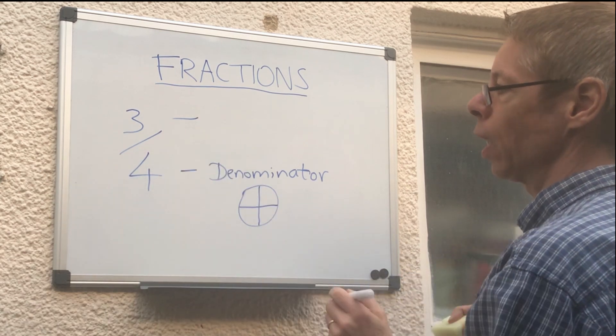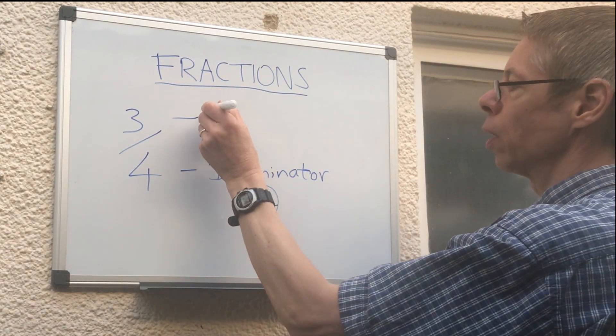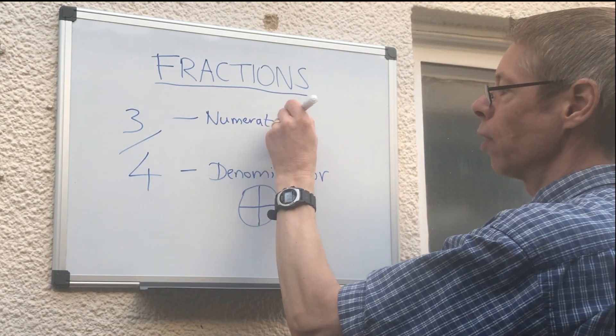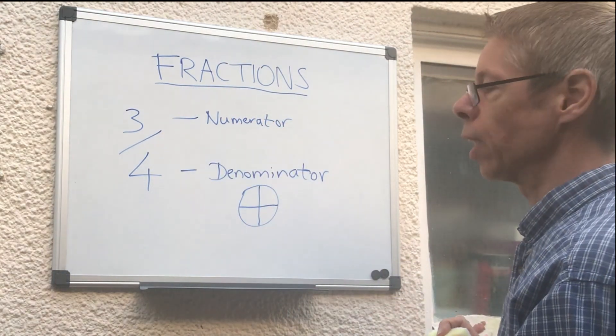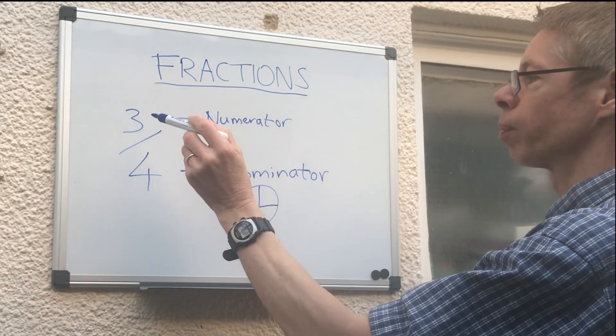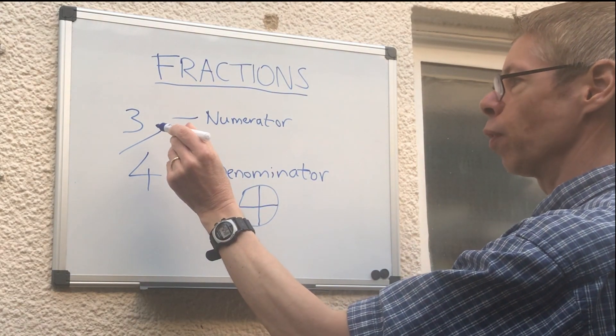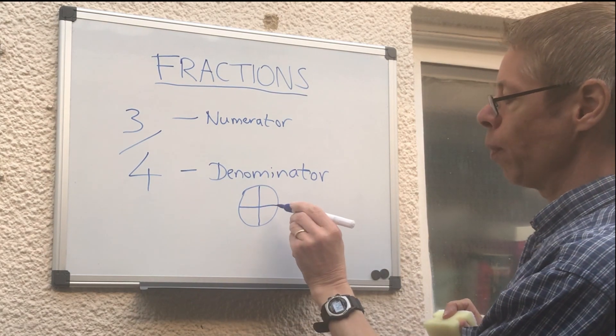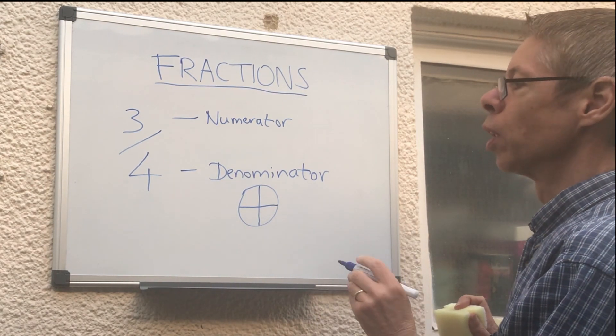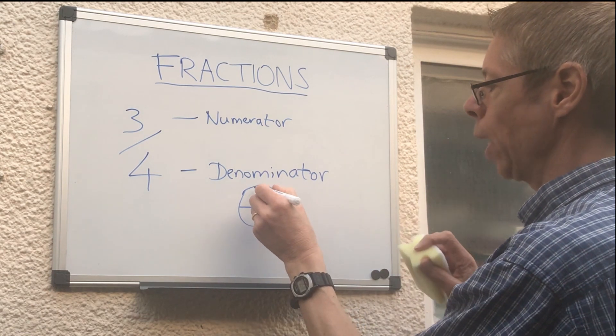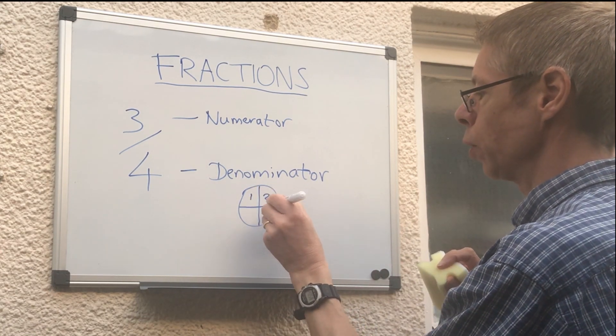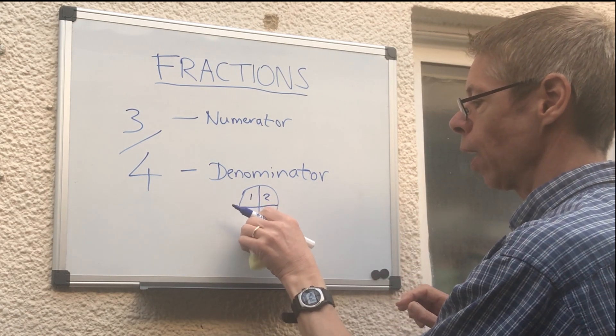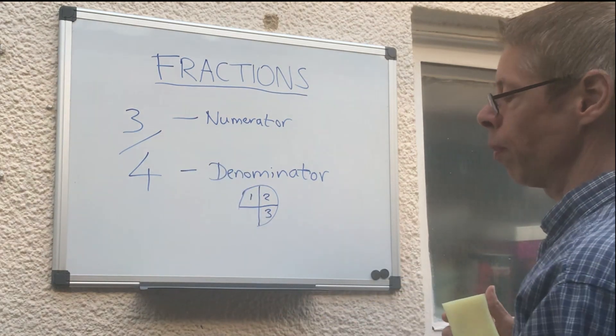This number here is our numerator. Sounds a bit like number, because that's what it is. It's the number of pieces of the biscuit that we actually have. So we divided our biscuit into 4, but we don't actually—we have 1, 2, 3 pieces—so we don't actually have that bit of the biscuit. So we have 3 quarters of a biscuit.